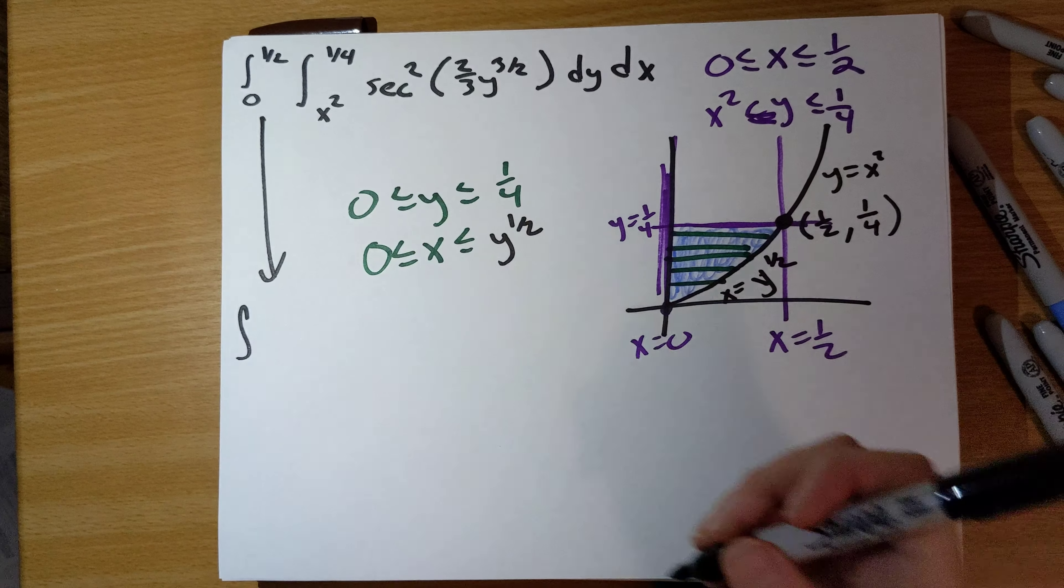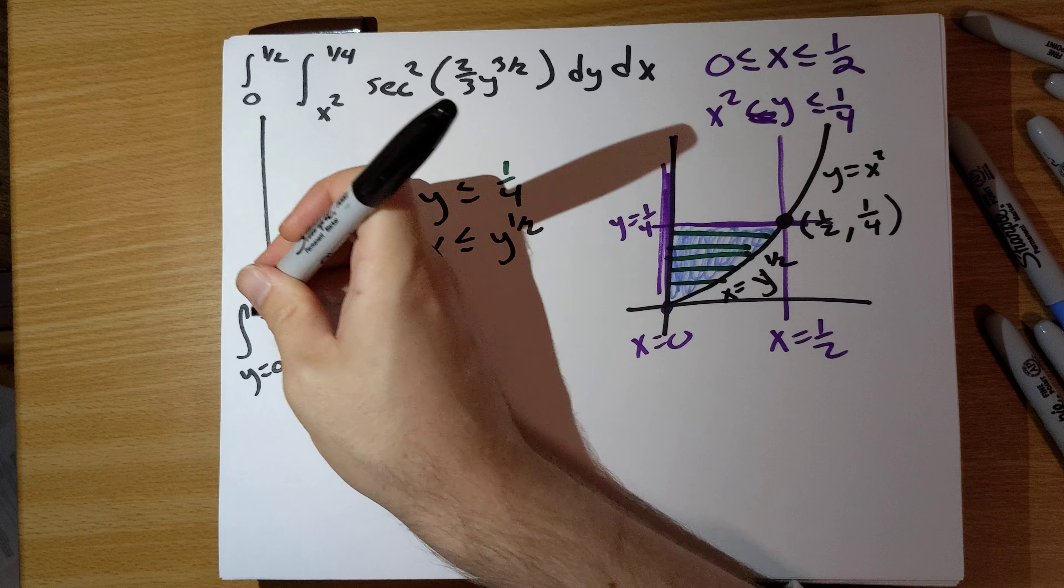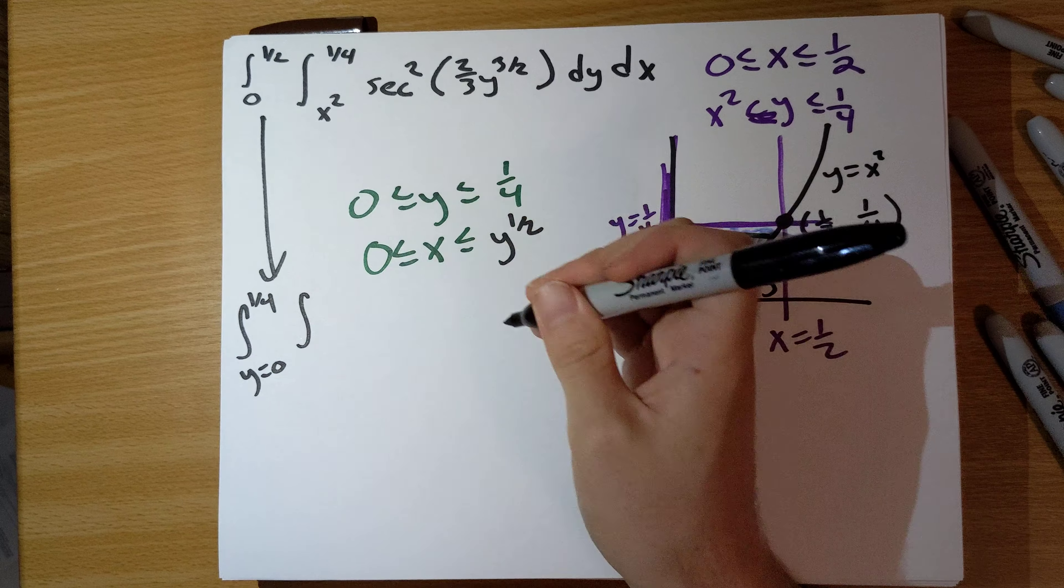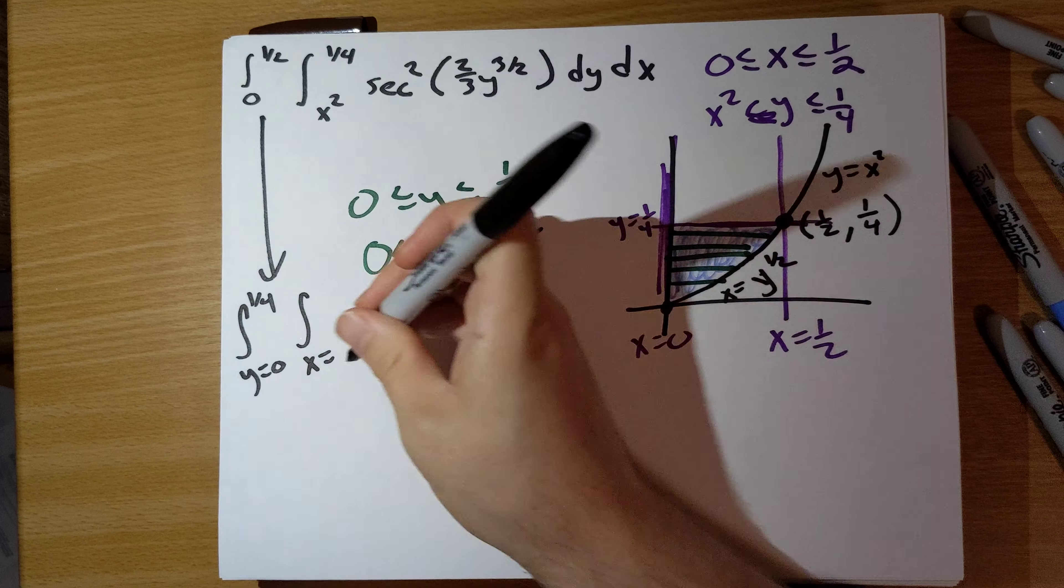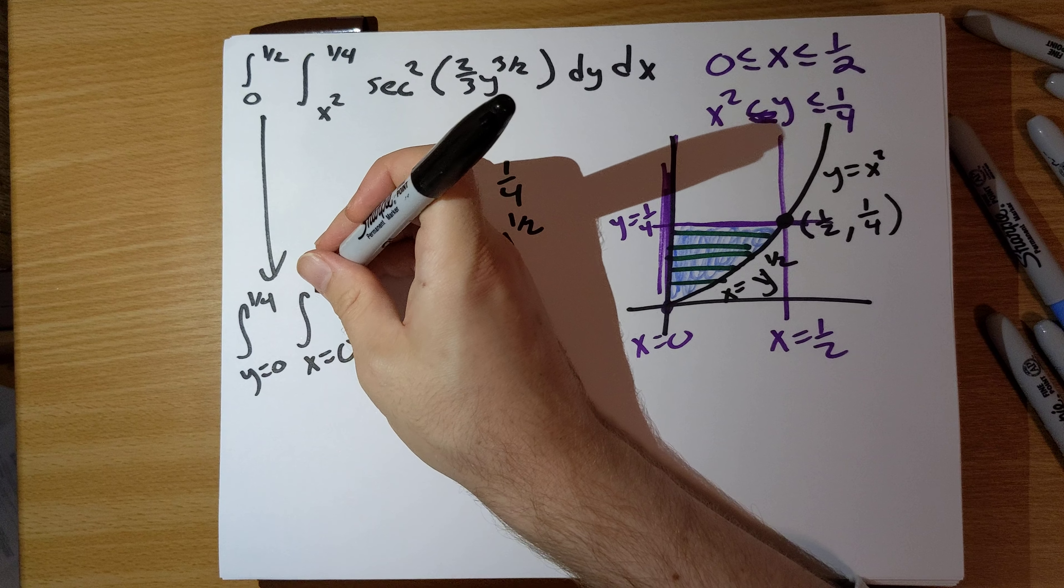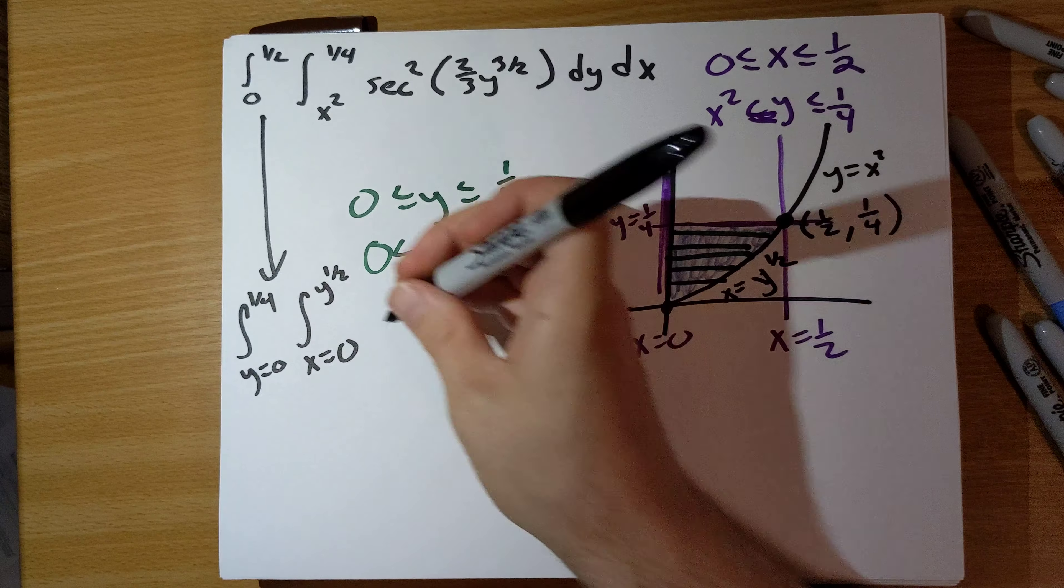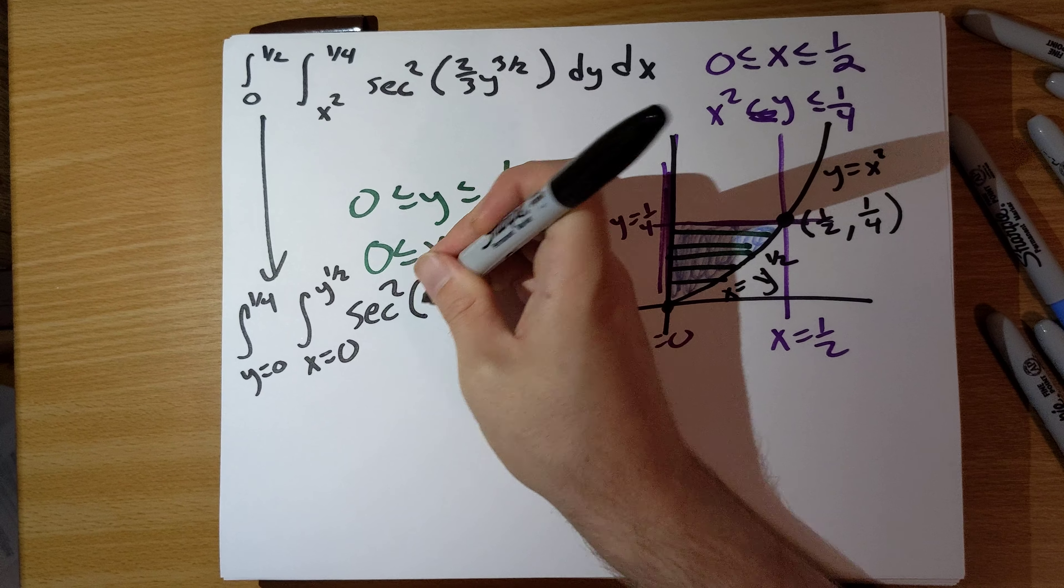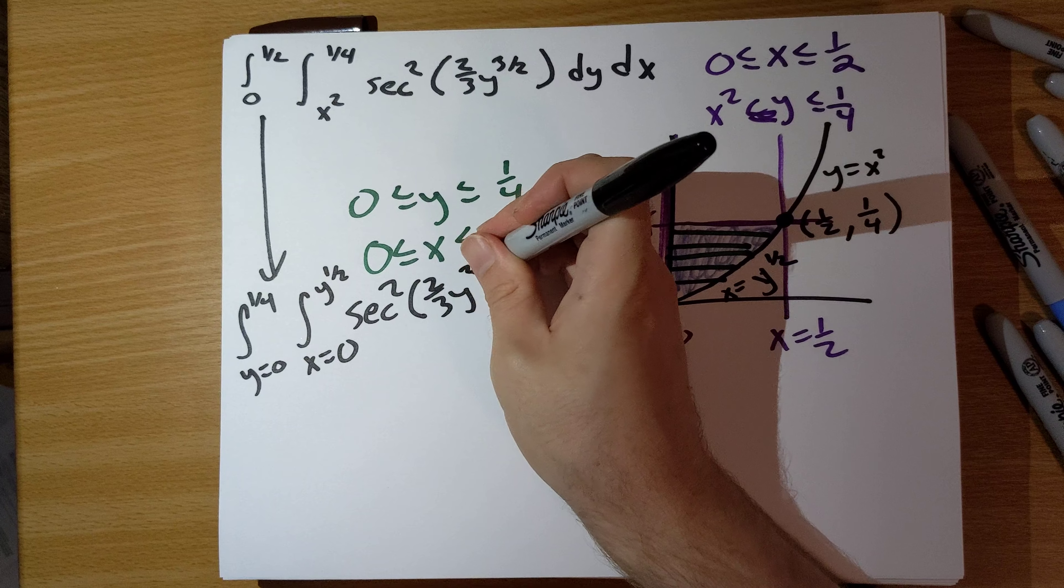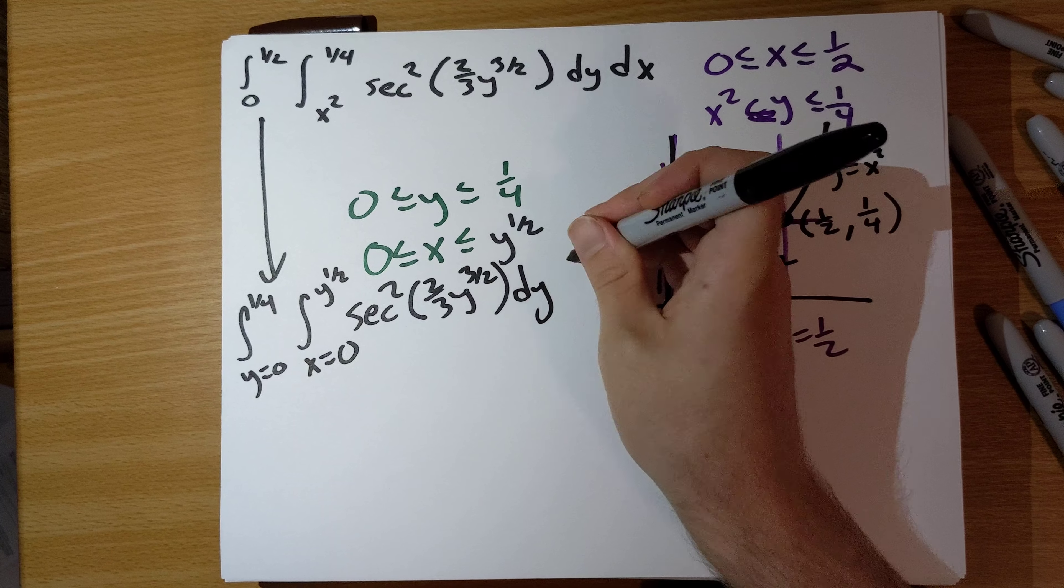So our new integral: y runs from 0 to 1/4, x runs from 0 to square root y, of secant squared of 2/3 y to the 3/2 dy dx.